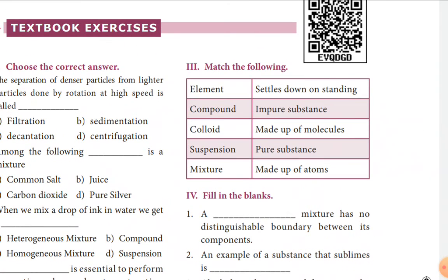Match the following: element is a pure substance; compound is made up of atoms; colloid is made up of molecules; suspension settles down on standing; mixture is an impure substance.